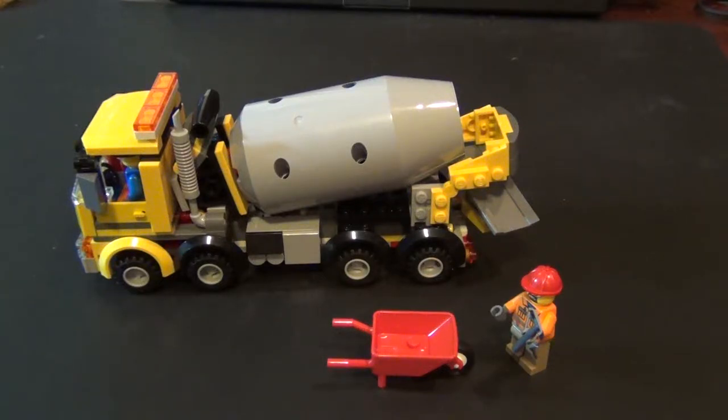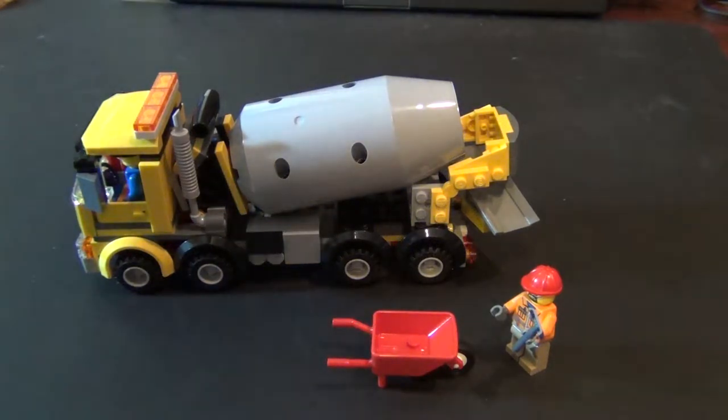Hey, we're back again with another review today. We're doing Lego Cement Mixer, set number 60018, comes with 221 pieces and 2 minifigures. It retails for about $20, you can find it on sale for about $15.